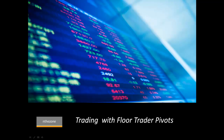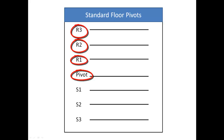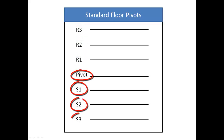Floor Trader Pivots are very powerful price-based support and resistance levels that are calculated using the prior day's high, low and close. The Floor Trader Pivots have been around for decades. Basically you have a daily pivot, and then you have three resistance zones above — R1, R2, and R3 — and then you have three support zones below the daily pivot at S1, S2, and S3.